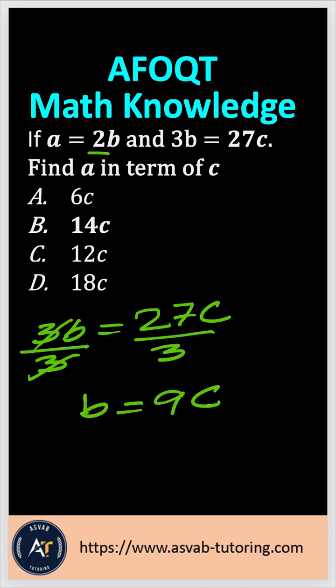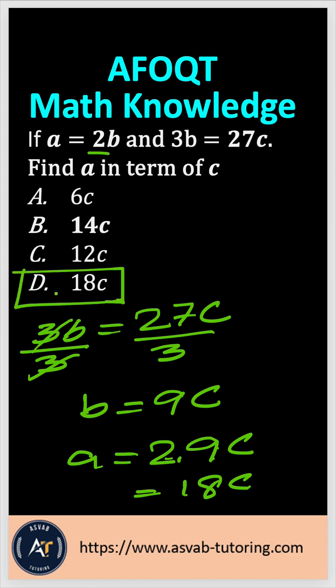Now plug this B into that equation. That is A equals 2 times 9C, so that gives you 9 times 2 is 18C. With that, the correct answer is option D.